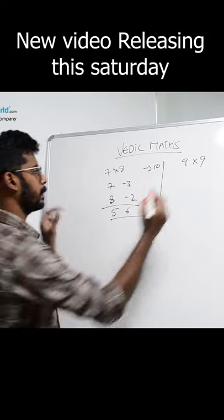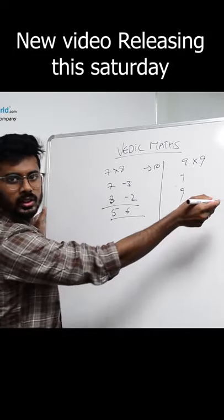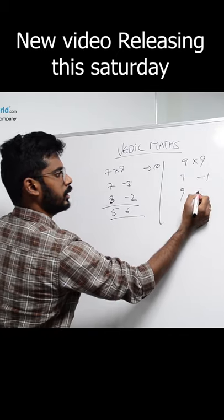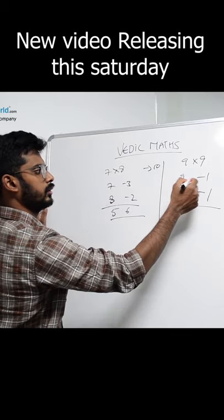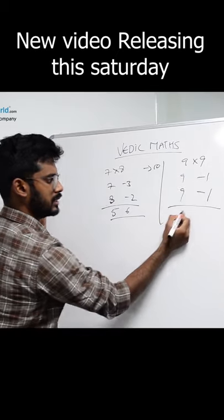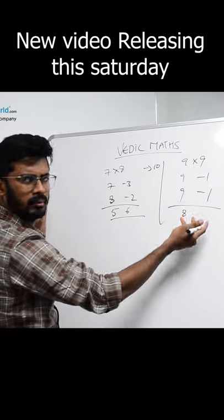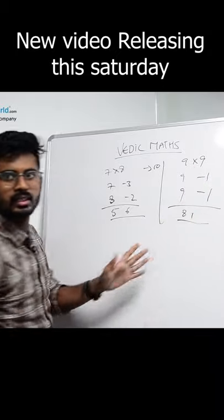For example, you don't know what is 9×9. 9 and 9, how much closer to 10? Minus 1 and minus 1. Okay? 9 minus 1 or 9 minus 1, which is 8. 1 into 1, which is minus 1. Same thing, 1 into 1, 81. So that's simple.